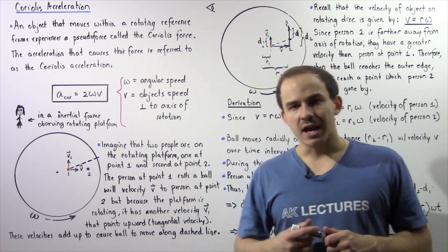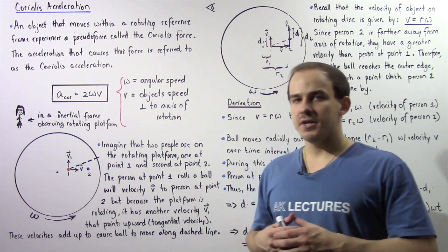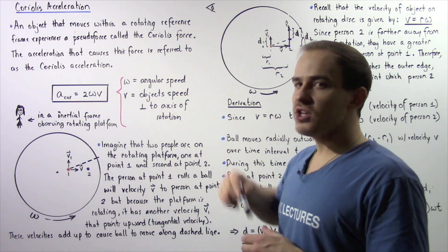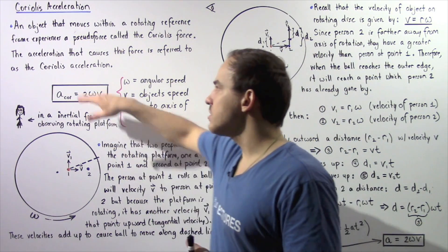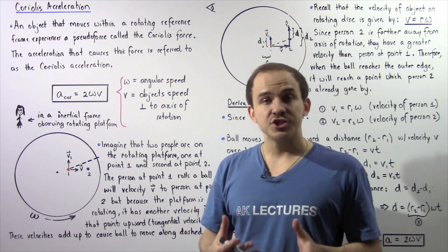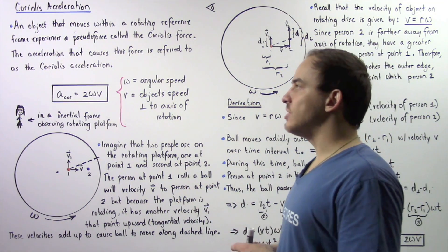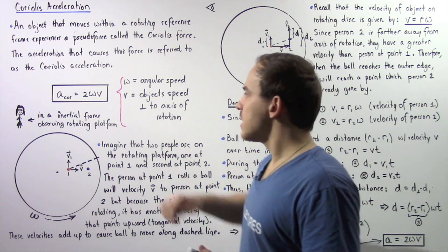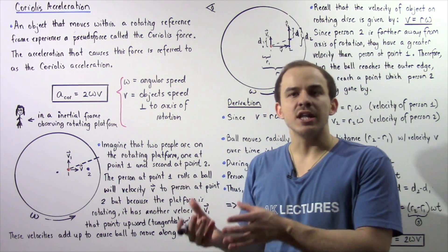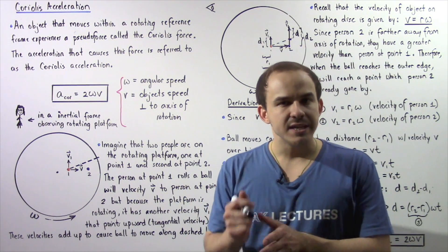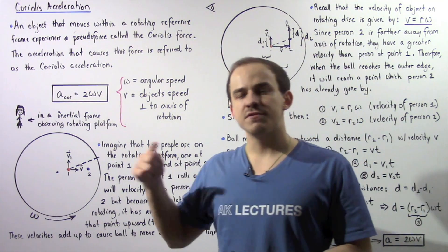Any time an object moves inside a rotating reference frame — a non-inertial reference frame — that object will experience a pseudo-force known as the Coriolis force. This Coriolis force is basically a result of an acceleration called the Coriolis acceleration, and the equation that gives us the quantity of this acceleration inside the non-inertial frame is: 2 multiplied by omega multiplied by V, where V is the velocity of our object on the rotating frame perpendicular to the axis of rotation, and omega is the constant angular speed of that rotating frame.